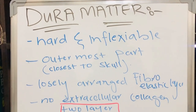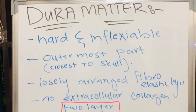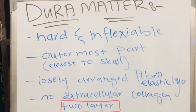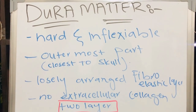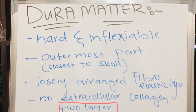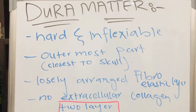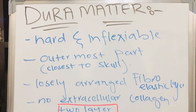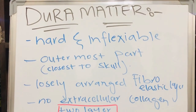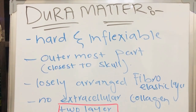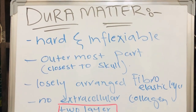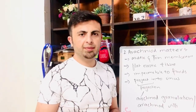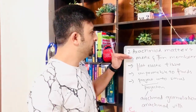The tentorium cerebri separates the cerebrum from the cerebellum. One of the most important functions of dura mater is that it forms several vein-like sinuses that carry blood — which has already delivered oxygen and nutrients to the brain — back to the heart. Inside the dura mater we have the arachnoid mater, which is the middle membrane.